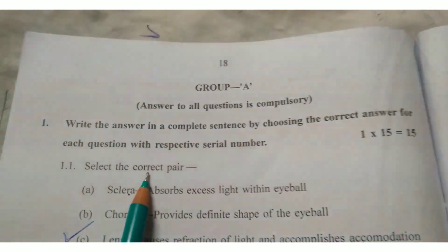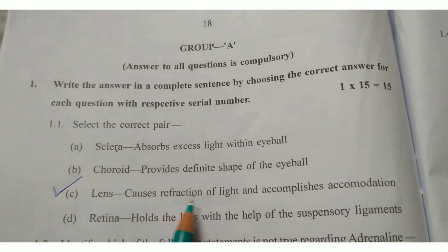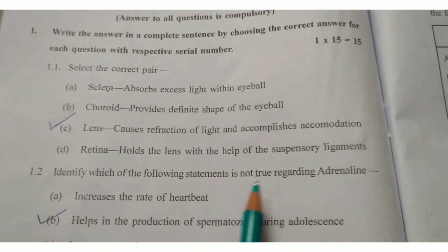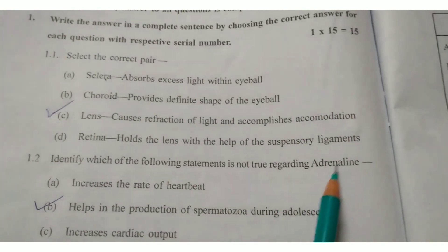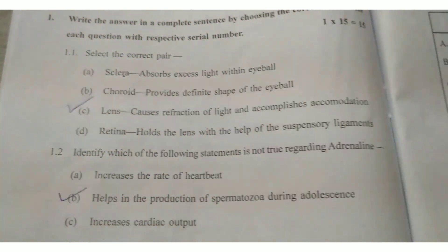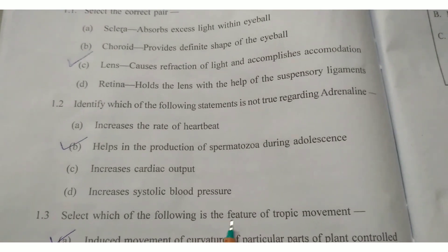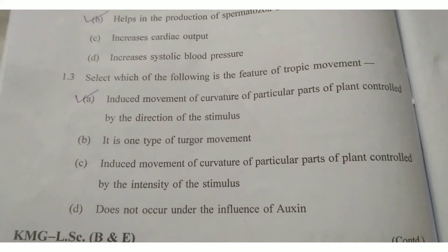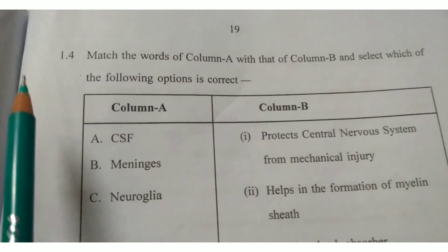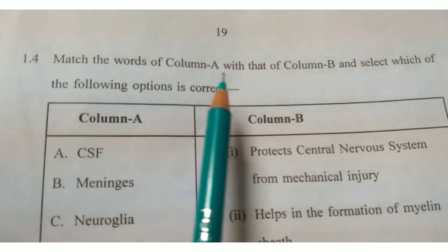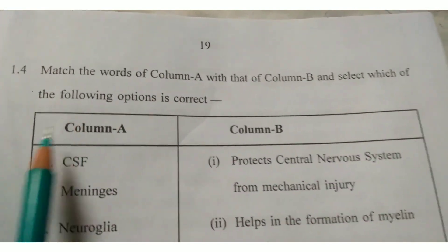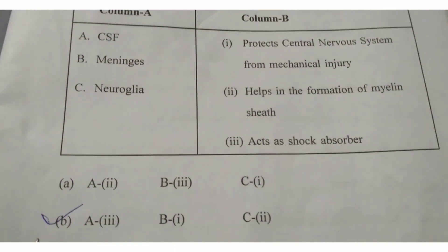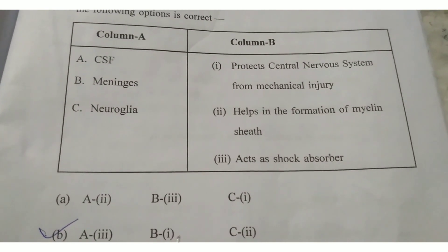Question 1.1: Select the correct pair. Write answer option C — Lens causes refraction of light and accommodation. Next, question 1.2: Identify which of the following statements is not true regarding adrenalin. Write answer option B. Question 1.3: Select which of the following is the feature of tropic movement. Write answer option A. Question 1.4: Match the words of column A with that of column B and select the correct option. Write answer option B — A with 3, B with 1, and C with 2.